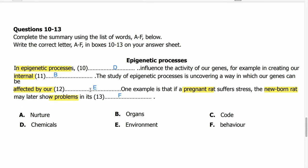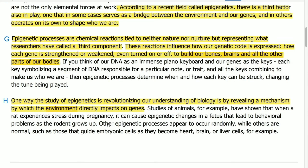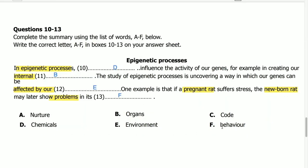Question 13: one example is that if a pregnant rat suffers stress, the newborn rat may later show problems in its dash. Reading the next line: studies of animals have shown that when a rat experiences stress during pregnancy, it can cause epigenetic changes in the fetus that lead to behavioral problems as the rodent grows up. So the answer is F — 'behavior.' Problems in its behavior.